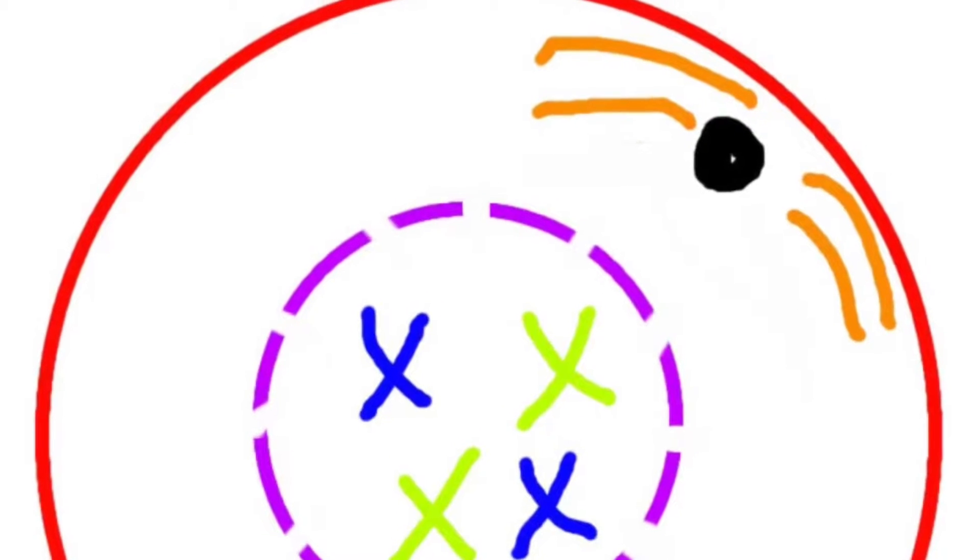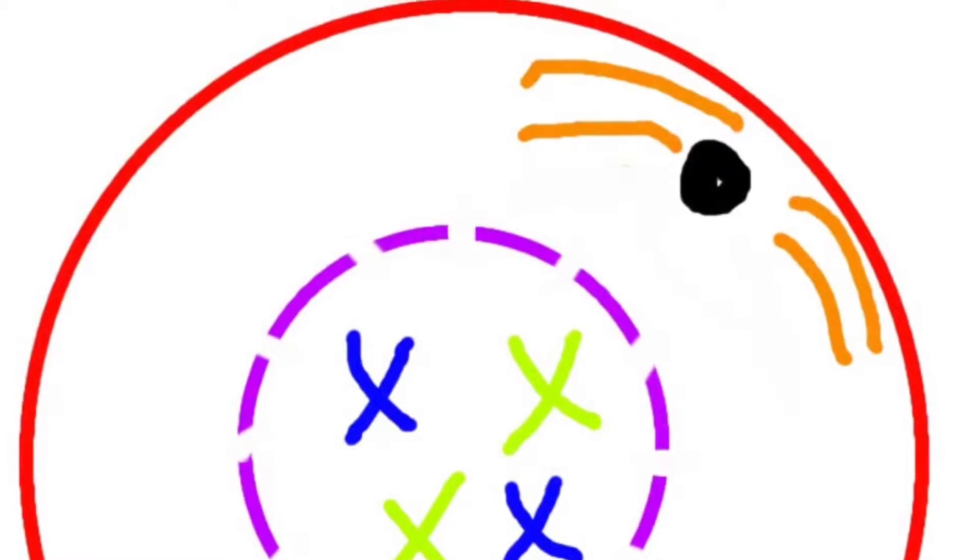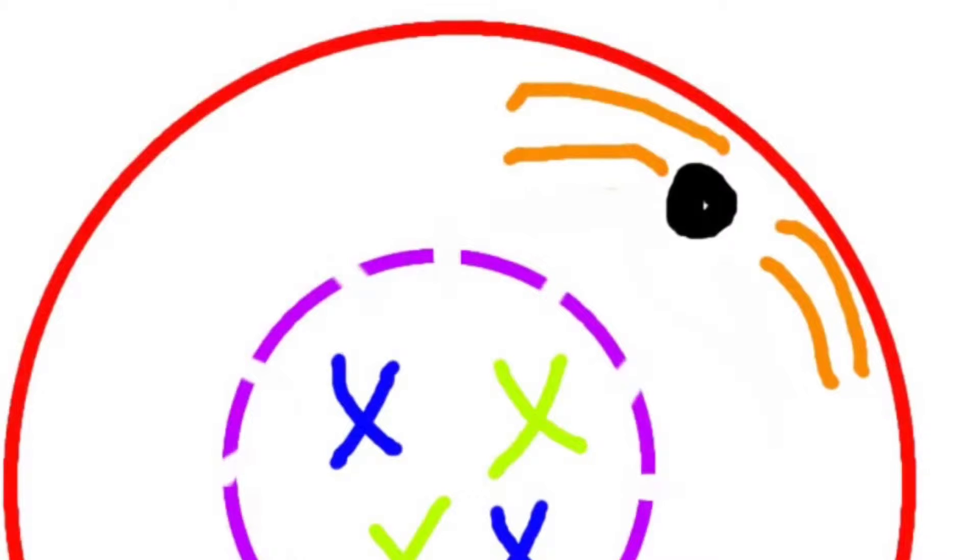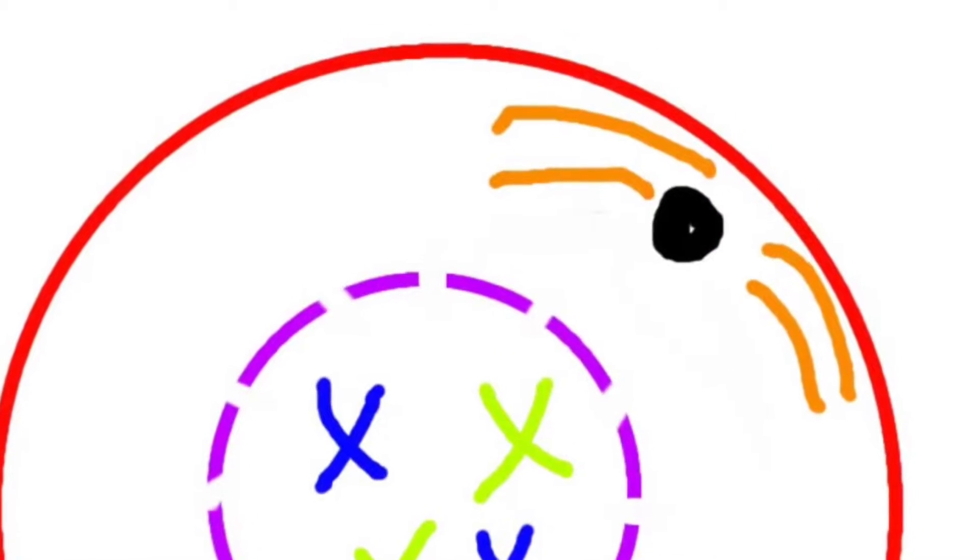Next, in early prophase, the centrioles that have divided form asters and move apart. The nuclear membrane begins to disintegrate.